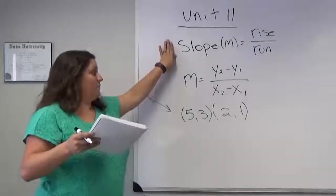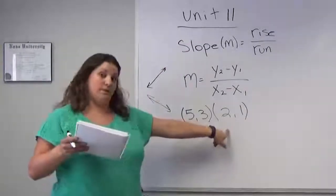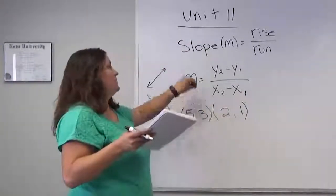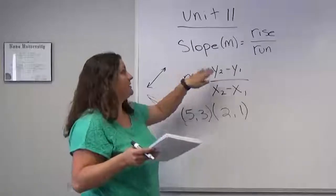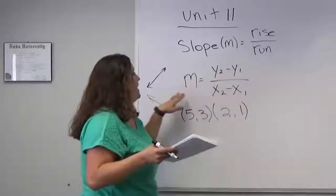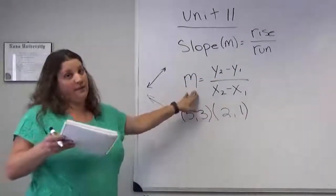To calculate the slope, you need two points on the line, and you use the change in y over the change in x. It's often called the rise over the run, and it's usually denoted by the letter m.